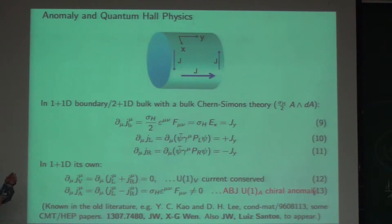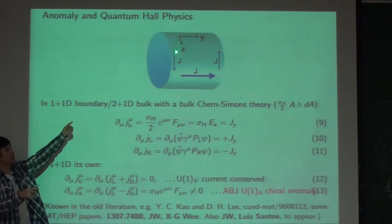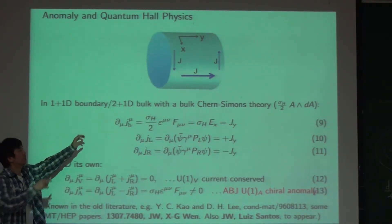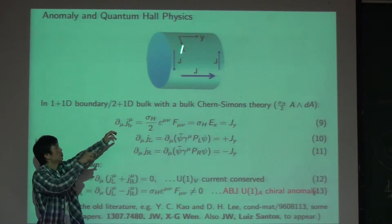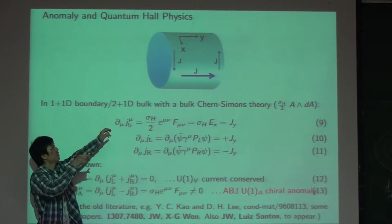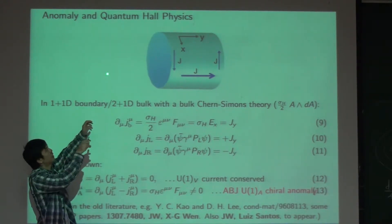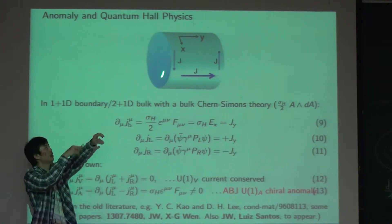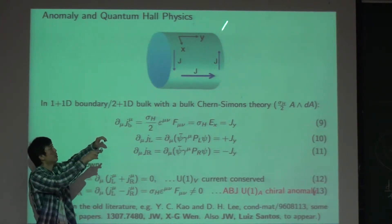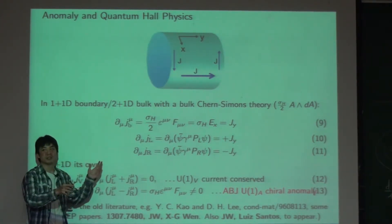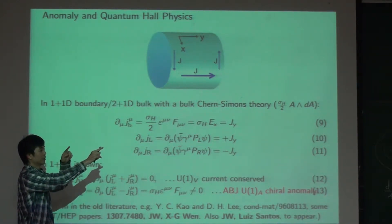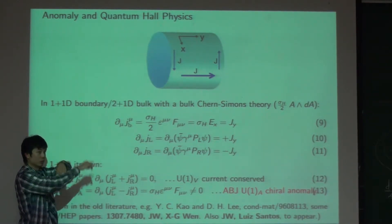That's exactly the point. If there is no electric field induced on the loop — meaning no magnetic flux is inserted — then the edge current just winds on one side, and there is a corresponding edge current going the other way on the other side. Nothing happens. They just wind independently.